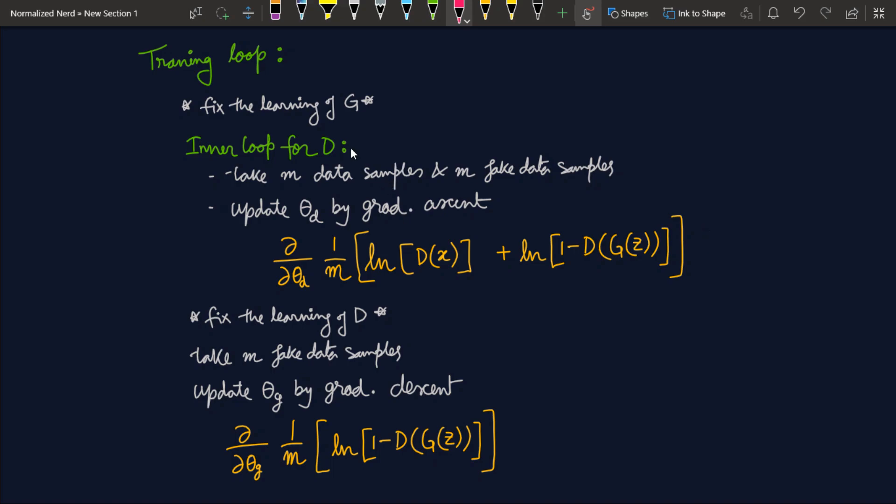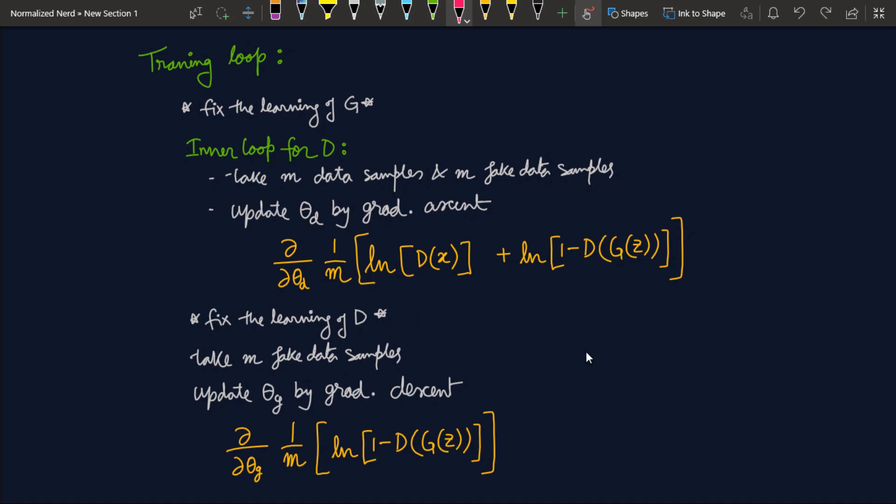So after we have performed k updates of D, we get out of this loop and we fix the learning of D. Now we are gonna train our generator. For this case we take only m fake data samples and update the parameters of our generator by gradient descent. Why? Because remember generator is trying to minimize the value function. Now you might ask why I haven't taken this portion in the update step of generator. Well look closely. Does this expression contains any term corresponding to the generator? No. So the partial derivative of this term with respect to theta g will be zero. That's why we are taking only this portion. One important thing you should note that for every k updates of the discriminator we are updating the generator once.